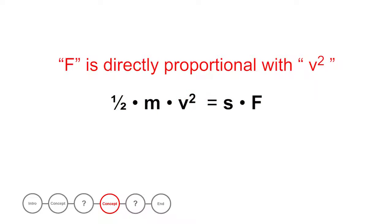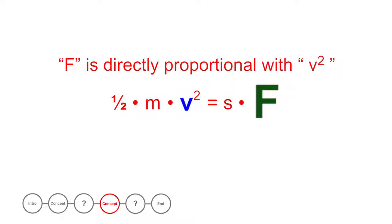The force is directly proportional with the velocity squared. Imagine that the mass and the distance do not change. When you double the velocity, the velocity squared changes by a factor of 4, so the force will become 4 times as much too. When the velocity is tripled, the force will be 9 times bigger, and so on.